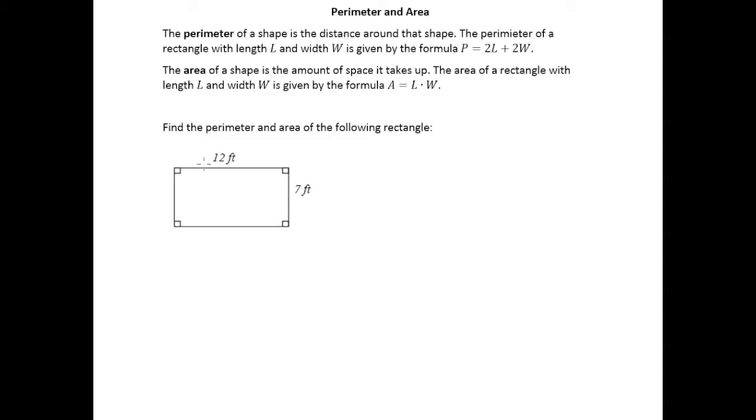So let's start in this rectangle with the perimeter. When you're labeling the sides as length or width, the length by convention is going to be the longer side, whatever that happens to be. So we'll call the length 12 feet and the width 7 feet.